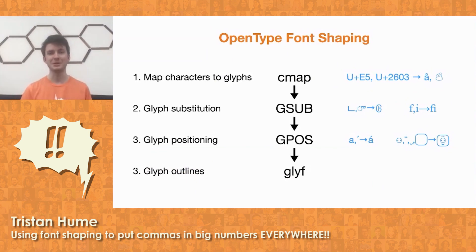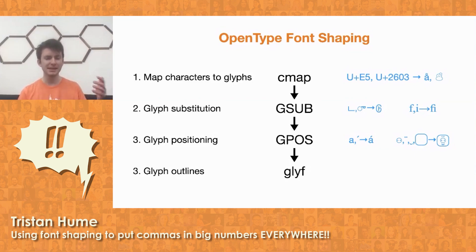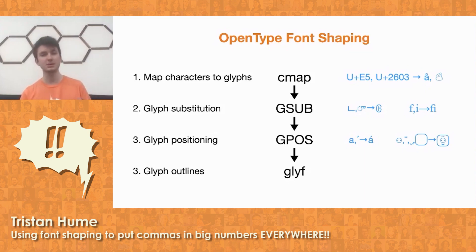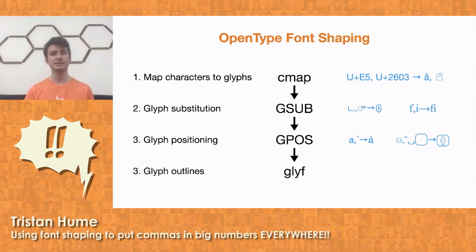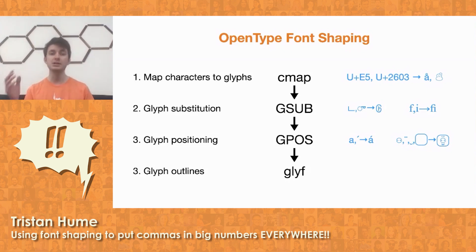I looked into the OpenType font shaping specification, which defines how all these things work. It says that things proceed in various stages controlled by tables within the font. First, the characters in the string are mapped to glyphs, which are internal things used by the font. Then glyph substitution rules replace glyphs with various other sequences of glyphs — for example, to do ligatures by combining glyphs together. Then this sequence goes to the glyph positioning step, which positions glyphs so that accents are above or below the character.